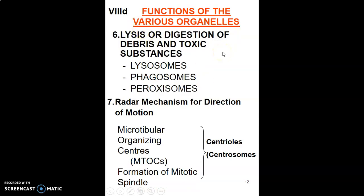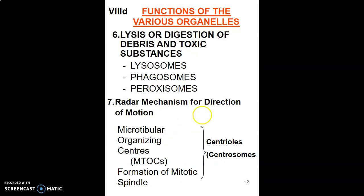We also have organelles that carry out lysis or digestion of debris and toxic substances — these include lysosomes, phagosomes, and peroxisomes. Organelles responsible for movement include the centrioles, which form the centrosomes and contain the microtubular organizing centers. They help in the formation of mitotic spindles.